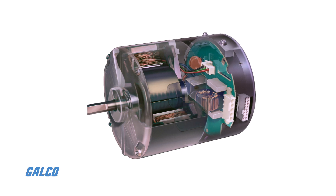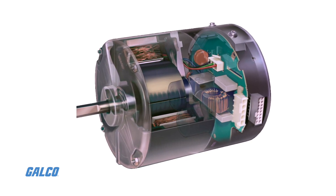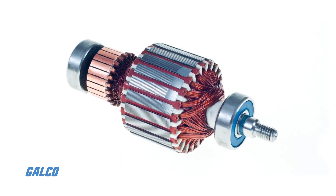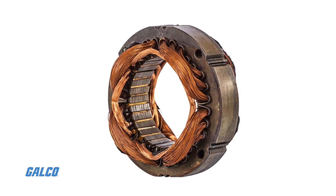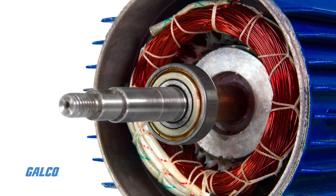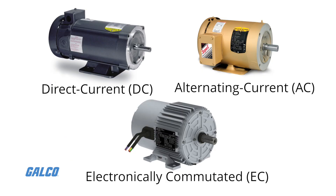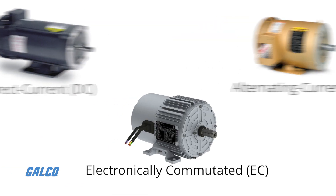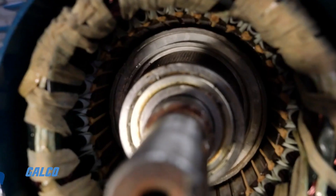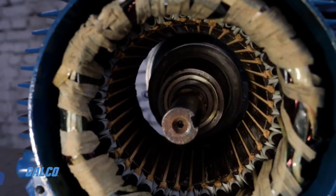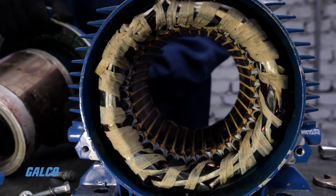EC motors are brushless DC motors controlled by external electronics. The rotor contains permanent magnets and the stator has fixed windings. Electronic circuitry switches the phases in the windings to make the motor turn. EC motors are the most efficient of the three and deliver exceptional control, but they are expensive and current technology limits them to lower power output applications.